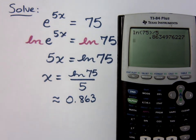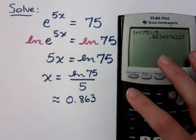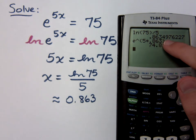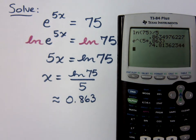And again, we can check this, because if we say e raised to the 5 times 0.863, I should get an answer that's close to 75. It gives me 74.8, so I know that I'm in the right neighborhood. Of course, had I written more of this information from the graphic calculator, my answer would have been more precise. Questions about that one?